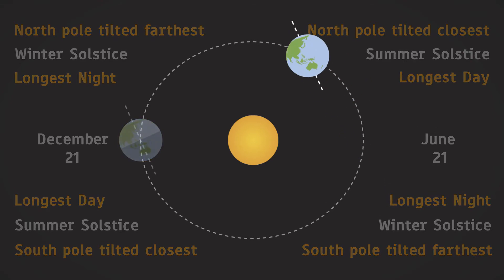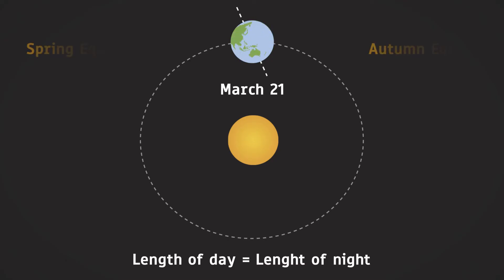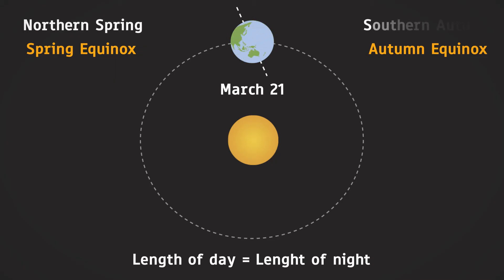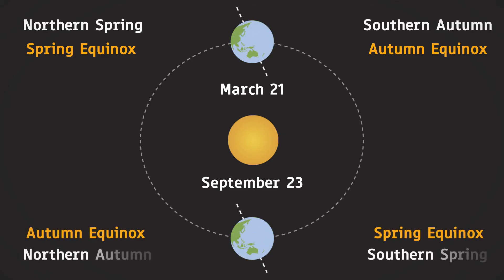During late March, both the hemispheres are at equal distance from the Sun and thus have an equal length of day or night. This is called an equinox and it marks the beginning of spring in the northern hemisphere and autumn for the southern hemisphere. Similarly, in late September, we have another equinox heralding the other two seasons.